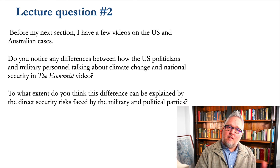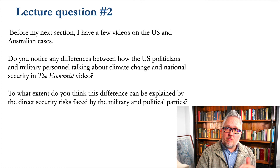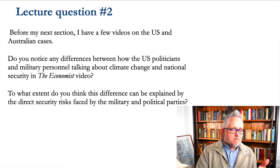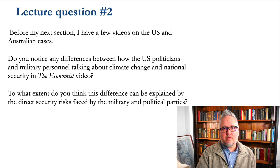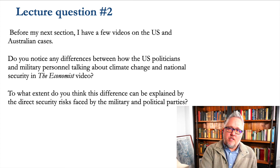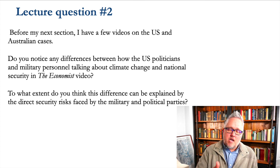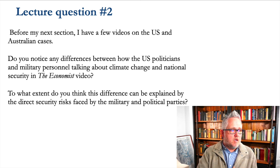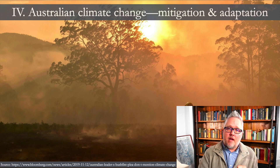I wanted to break things up with a couple of videos looking at the U.S. and Australian cases — there are a few videos in the playlist as well as on WADL. As you watch those, a question to consider: what are the differences between how U.S. politicians and military personnel talk about climate change and national security in the Economist video specifically? To what extent can the differences between military and politicians be explained by the security risks they face? What timeline is the military looking at as opposed to political parties thinking about the next election? Respond on WADL and we'll come back to looking at Australian mitigation and adaptation efforts.